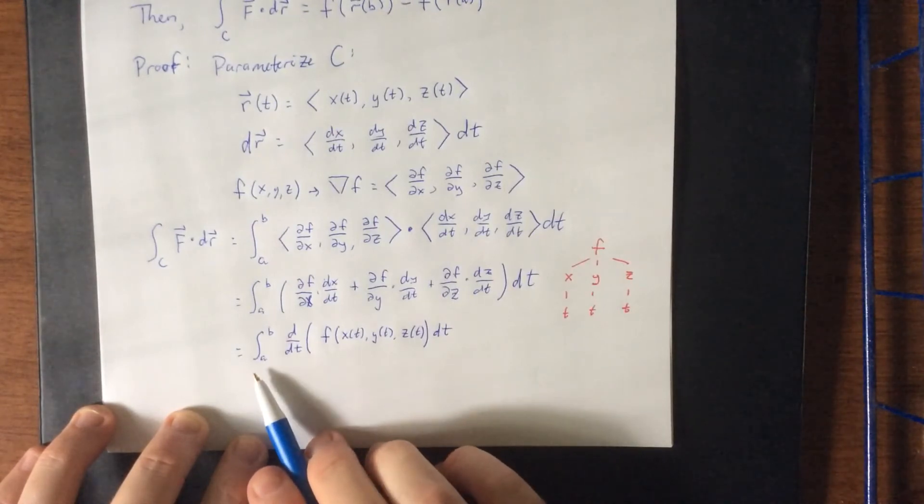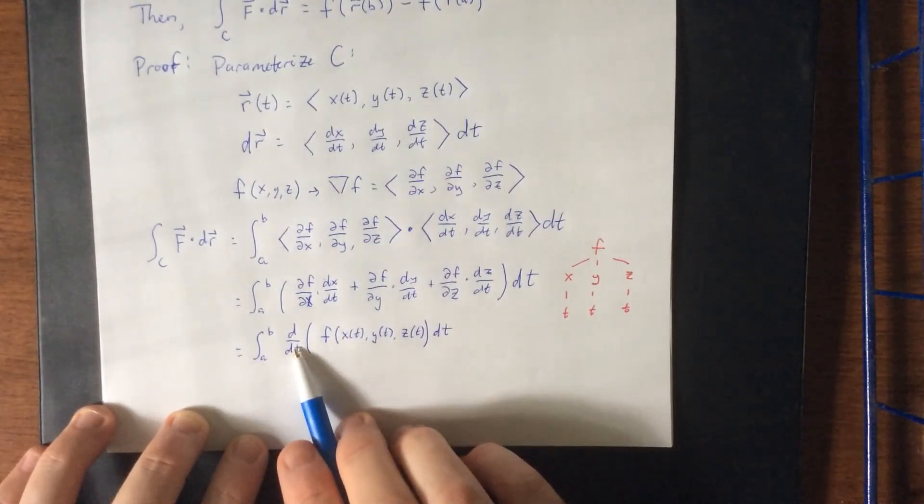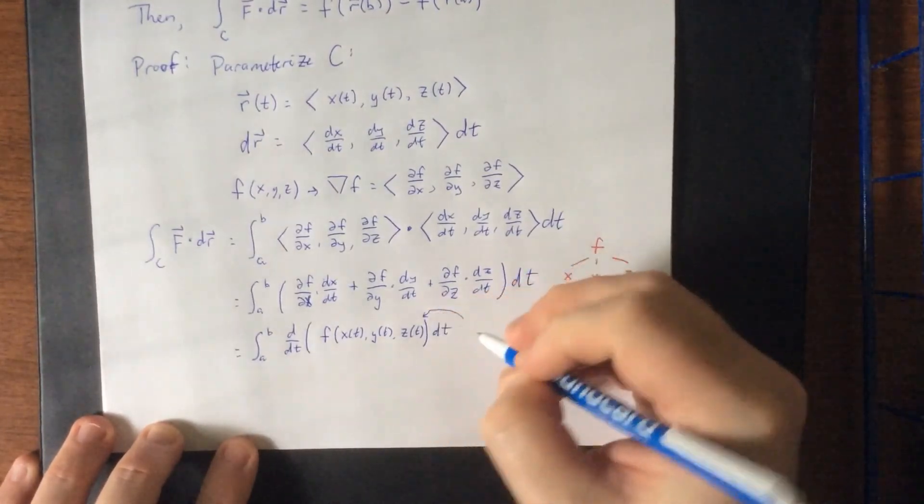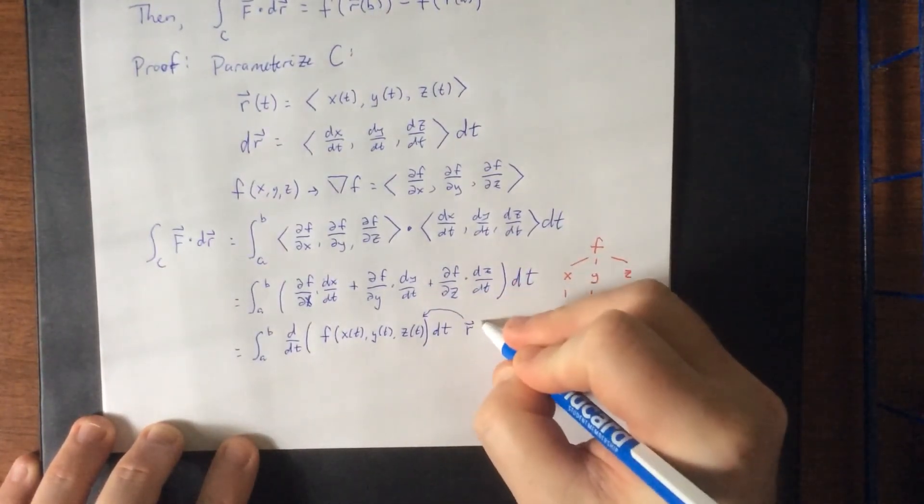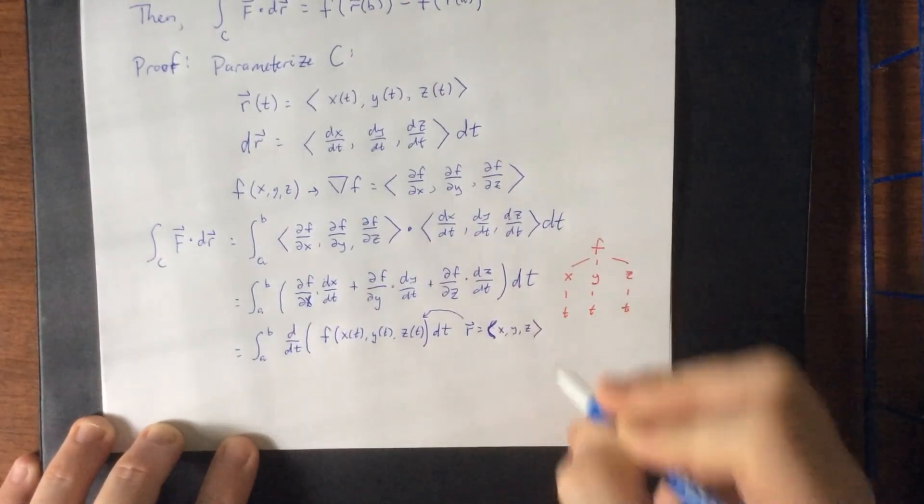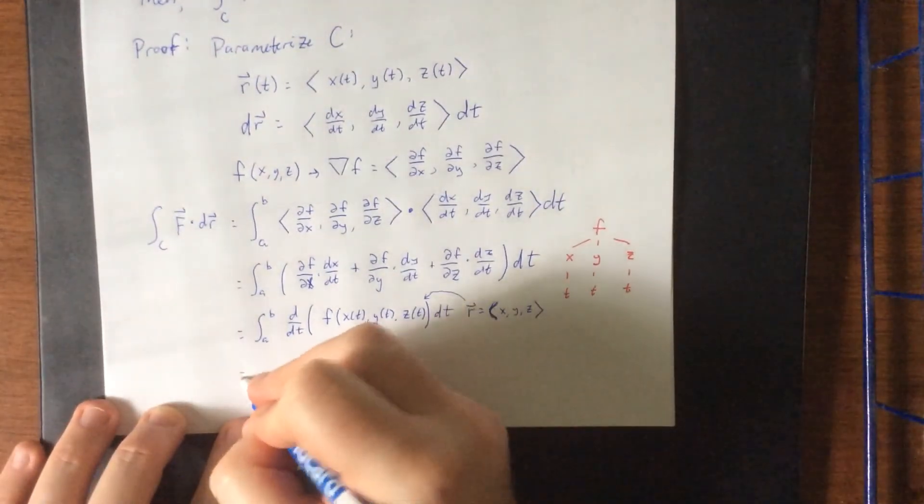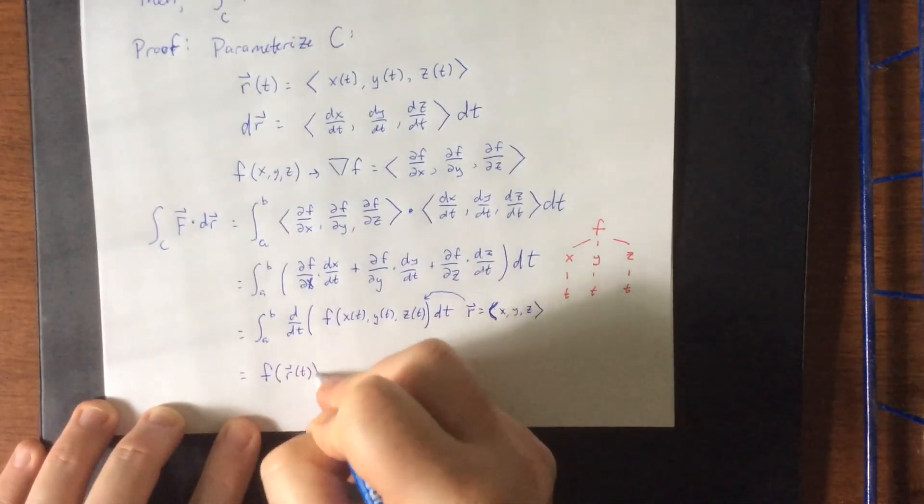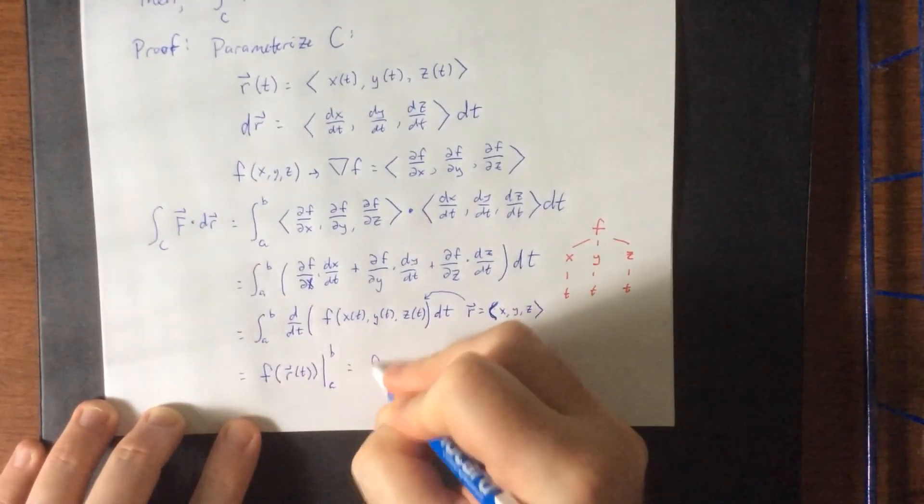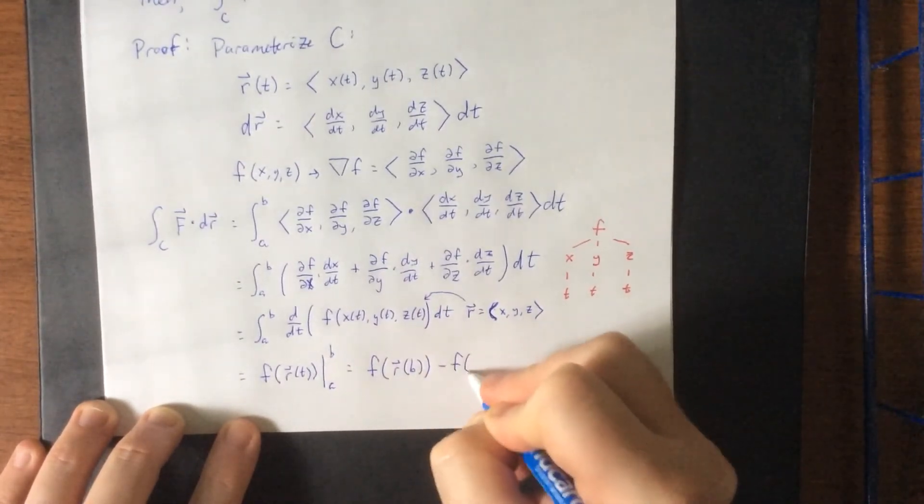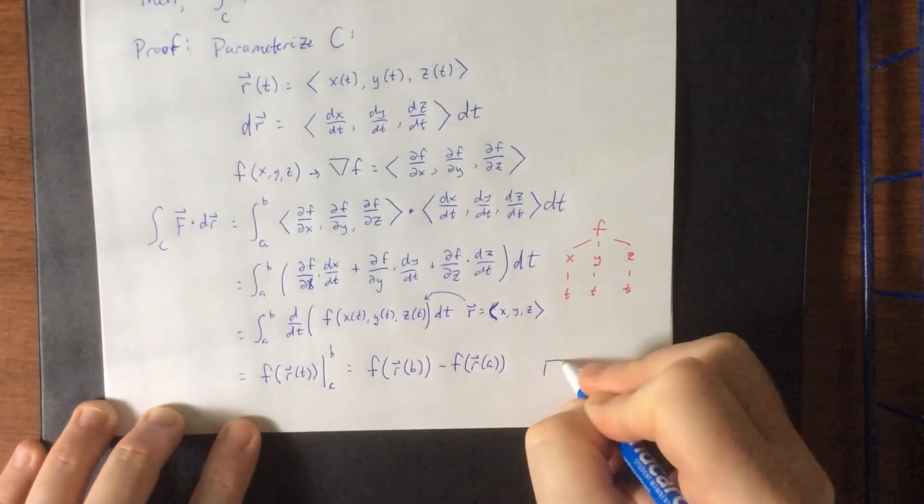The fundamental theorem of calculus part one says that we can evaluate this by saying that the integral will cancel out the derivative, and we'll just evaluate F at these two points. Now, do keep in mind that we use the notation that R is equal to the vector X and Y and Z, and since we need to evaluate this at X and Y and Z, this will be equal to F of R of T going from T equals A to T equals B, which gives us exactly the result that we were looking for back when we stated the fundamental theorem of line integrals.